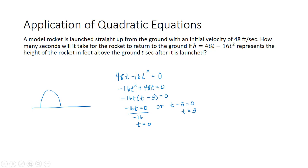So t is the number of seconds that it takes for the rocket to return to the ground. t equals 0 is that initial launch—it was on the ground. So at time t equals 0, it started on the ground, and then 3 seconds later, it returned back to the ground. So the solution for this problem is 3 seconds.